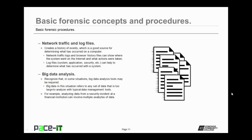A type of forensic evidence that's often overlooked are network traffic files and log files. These create a history of events, which is a good source for determining what has occurred on a computer. Network traffic logs and browser history files can show where the system went on the internet and what actions were taken. Log files — including system log files, application logs, and security logs — can help to determine what has occurred with a system. Finally, there's big data analysis. In some situations, big data analyst tools may be required. Big data in this situation refers to any set of data too large to analyze with typical data management tools. An example would be analyzing data from a security incident at a financial institution, which can involve multiple exabytes of data.